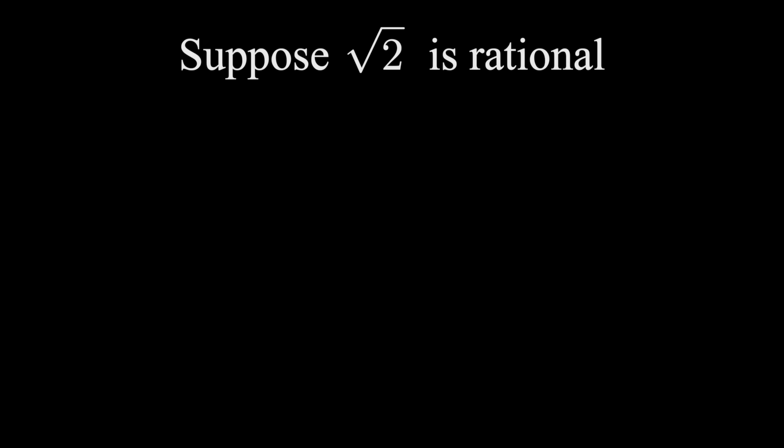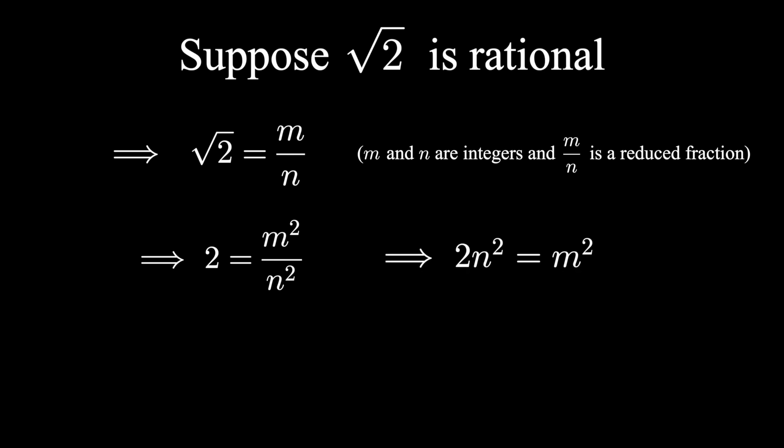Another great contradiction comes from trying to show the square root of 2 is rational. Let's suppose that the square root of 2 is indeed rational, that it can be written in lowest terms as the ratio of two integers. We'll call them m and n. Squaring both sides means that 2 equals m squared over n squared, or that 2n squared equals m squared.